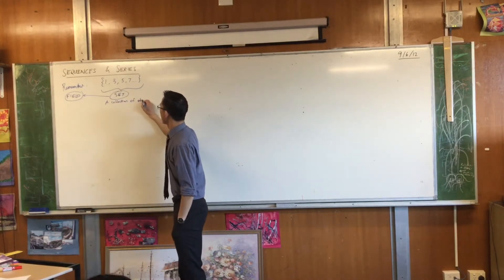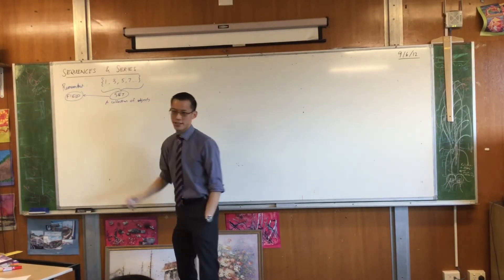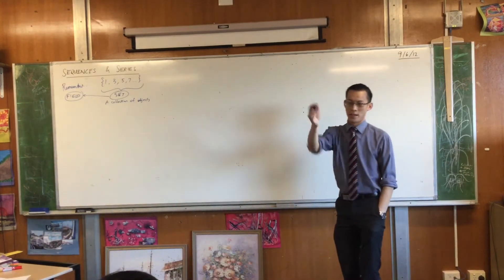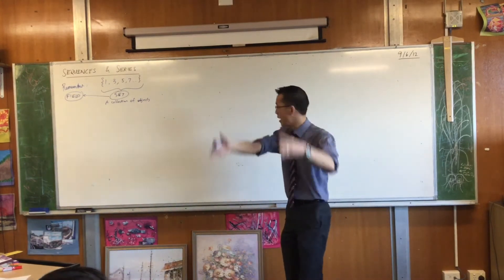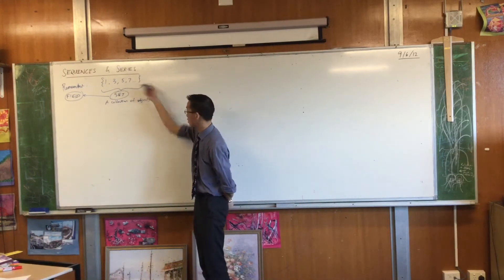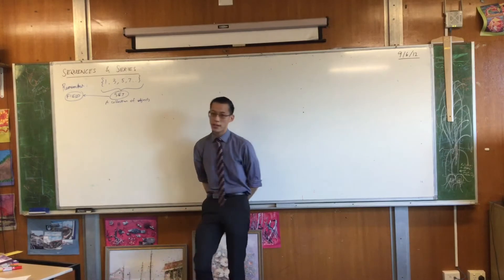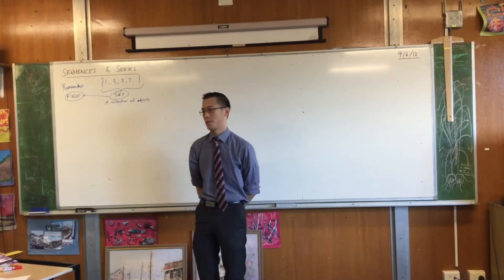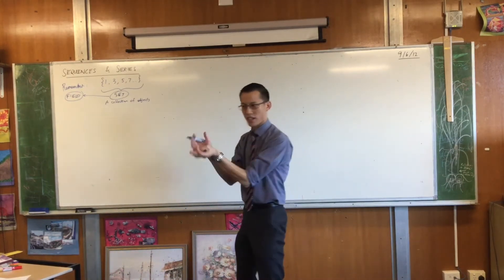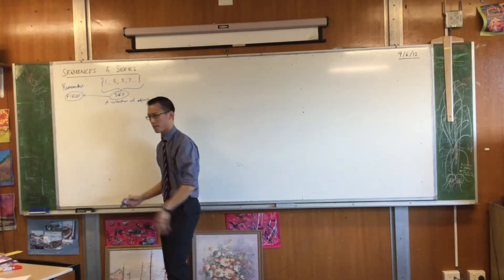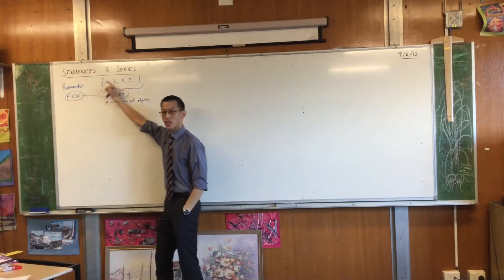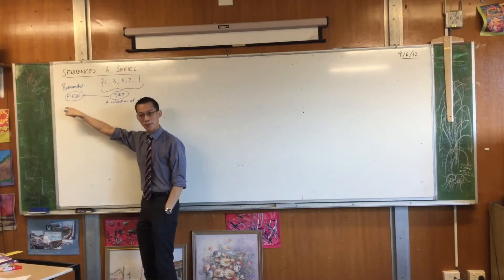So jot this back down, because today's concept is built upon this again in a different way from a field. A set is just a collection of objects. You can have a finite collection of objects — such as Tina, Crystal, Chloe, and Jasmine — or you can have an infinite set of objects, dot dot dot, this goes forever. So this is the set of all odd numbers. We sort of added on extra conditions; if you have a special kind of set, it becomes a field.